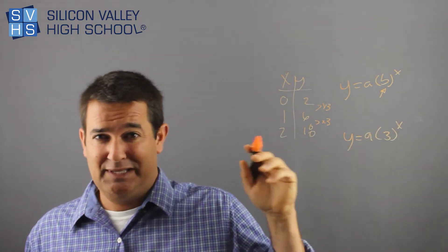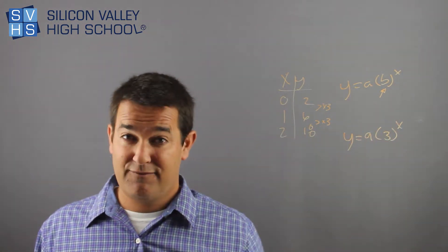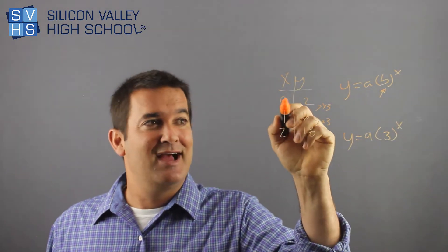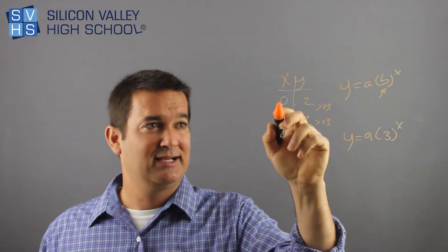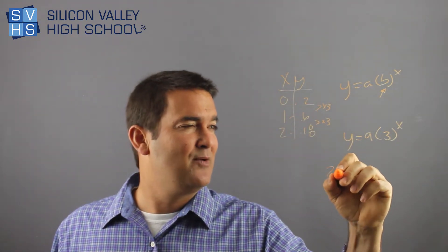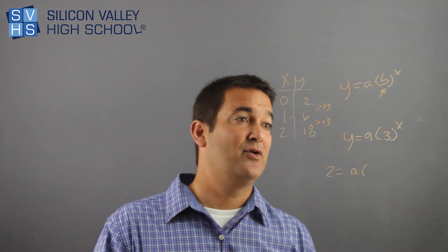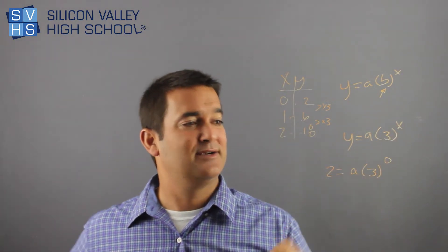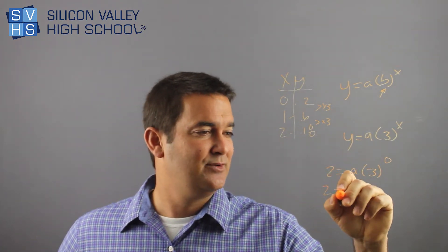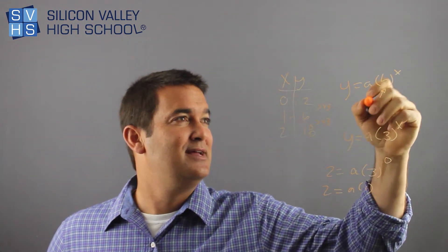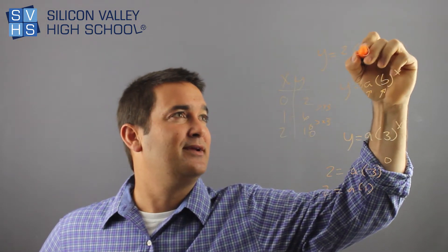But that's not done yet because I still don't know a. What if I had an x and y value to plug in — could I then solve for a? I have x and y values right here in my table. Let's pick the first point: y is 2, x is 0. So: 2 = a · 3^0. What's anything to the 0? It's always 1. So 2 = a · 1, meaning a = 2. I can put my 2 in here — now I'm totally done. y = 2 · 3^x.